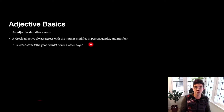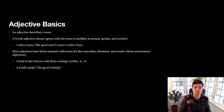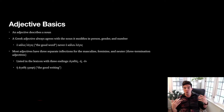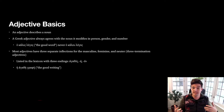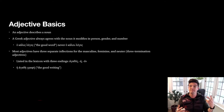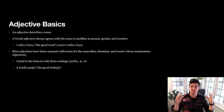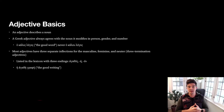An adjective is always going to match the noun that it's modifying in case, gender, and number. Most Greek adjectives are going to have three different inflections or three different endings: one for the masculine, one for the feminine, and one for the neuter. This is the way that the vast majority of adjectives in Koine Greek work.